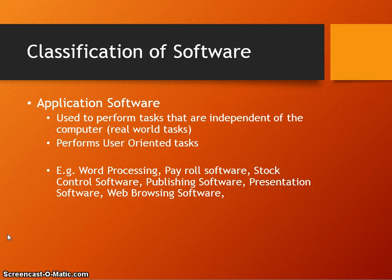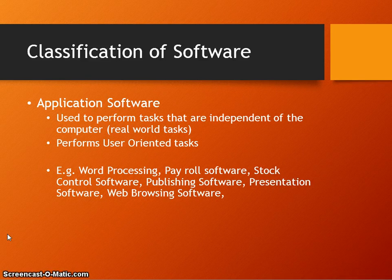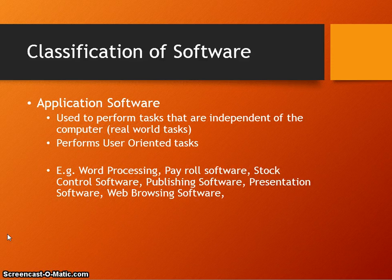Application software performs tasks we could complete without the use of a computer — for example, writing a letter without a word processor, or generating a stock control system, which could be done on paper without a computer program. So application software performs tasks that are independent of the computer and performs real-world tasks.